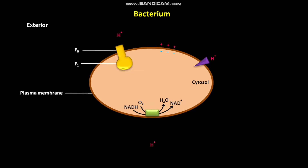Also, due to this H+ ion concentration difference across the plasma membrane, H+ ions move into the cytosol from the exterior of the bacterium through the F0 portion of the F0-F1 complex, or ATP synthase. This H+ ion movement is coupled to ATP synthesis in the F0-F1 complex. During ATP synthesis in the F1 portion, ADP and Pi are converted into ATP in a biochemical reaction.